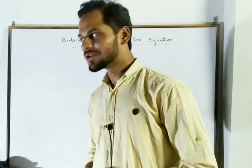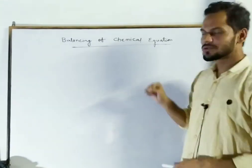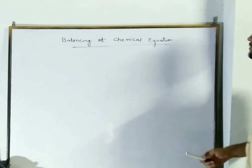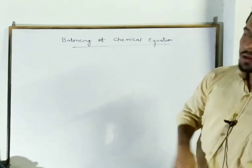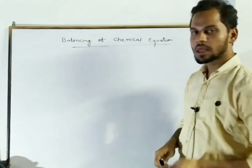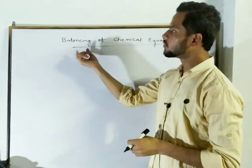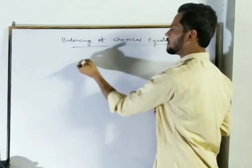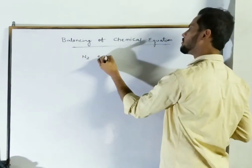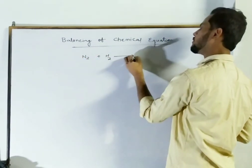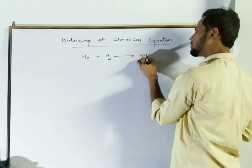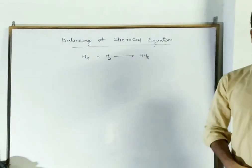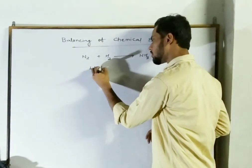Hello students, today's topic is balancing of chemical equations. In the previous class we studied the types of chemical reactions, and now we move to the next topic: balancing of chemical equations. Let us take one example to learn how to balance a chemical reaction. For example, when nitrogen reacts with hydrogen to obtain ammonia, we need to balance the equation.